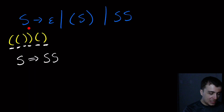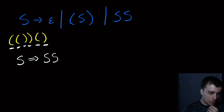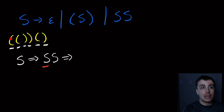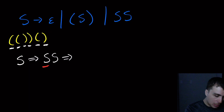The left S is going to generate the left half of the string, and then this S is going to generate the right part. These variables are independent of each other - they don't have to generate exactly the same length of string or the same string at all. So let's work with the left S. The only reasonable thing we can do, because we have this nesting of lefts and rights, is to apply this rule twice, since the other option doesn't give us that structure.